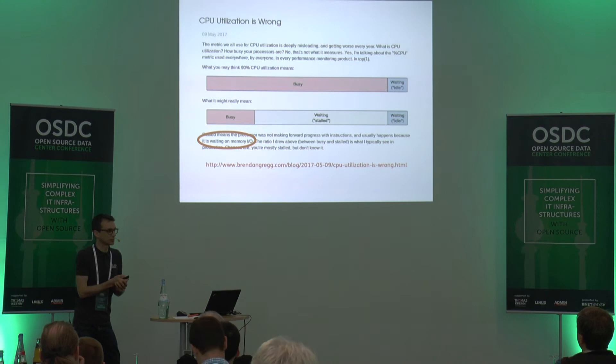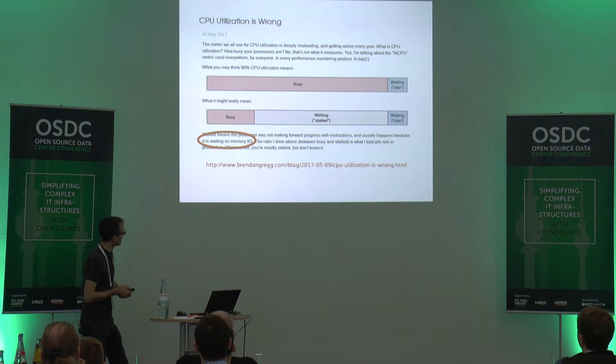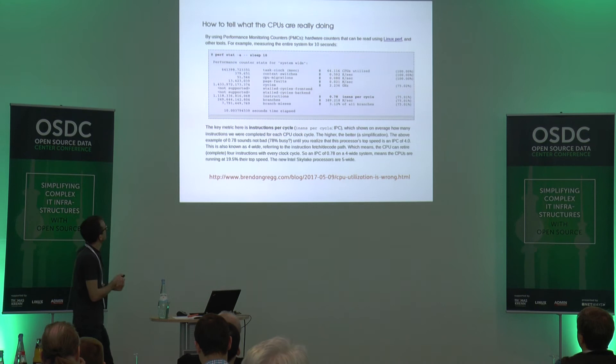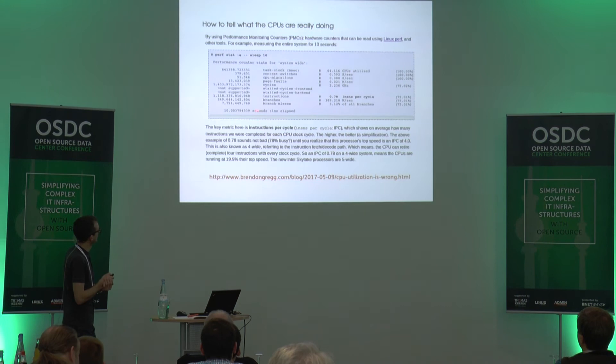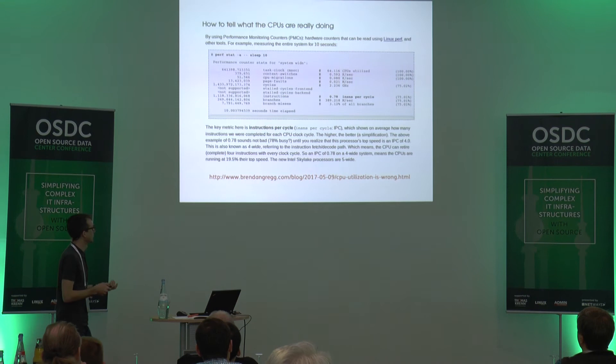I really recommend reading this blog posting. What you can do is use performance monitoring counters — specifically instructions per cycle. This is the key metric. We're seeing for example 0.78 instructions per cycle. This sounds good, but we have to take into account that this architecture has an IPC performance of 4 — newer Skylake processors have a maximum performance of 5. How can you interpret these values? When it's lower than 1, it's most likely that your memory is stalled. When it's higher than 1, it's most likely instruction-bound.